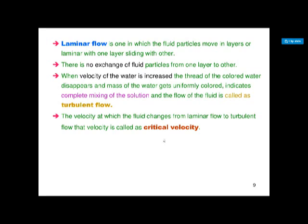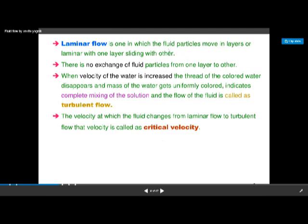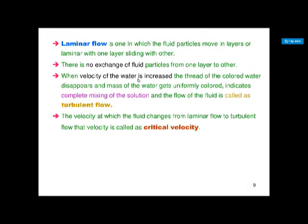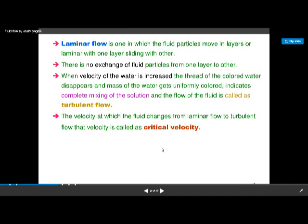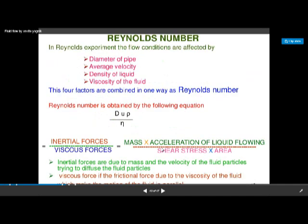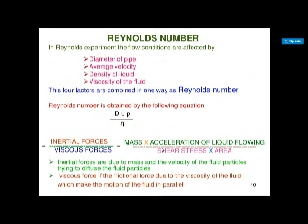In laminar flow, fluid particles move in layers — there is no exchange of fluid particles from one layer to another. When the velocity of the water increases suddenly, the colored solution gets disturbed — that we call turbulent flow. The velocity at which flow changes from laminar to turbulent is called the critical velocity.